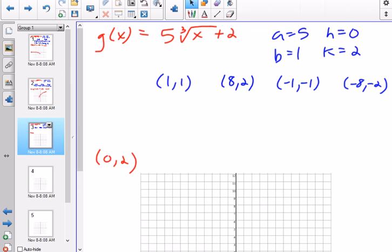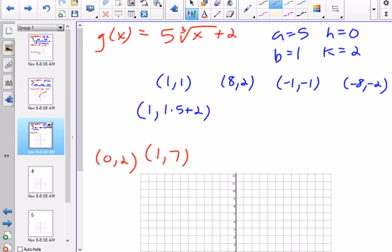Now what's going to happen here is that nothing is going to happen to the x's because the x's are supposed to be divided by 1 and add 0, so nothing is going to happen to the x's. I'm still going to have a 1 here. But then the y's are going to be times 5 and plus 2. 1 times 5 plus 2 is 7, so I'm going to have a point at 1,7. Here I'm going to keep my 8, 2 times 5 plus 2 is going to be 12. So 8,12 is going to be part of my graph.